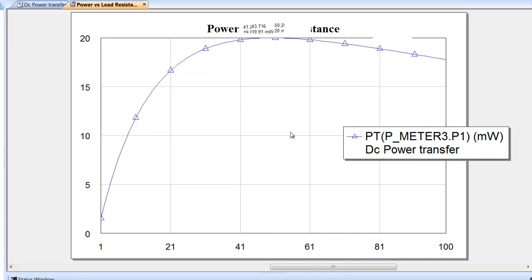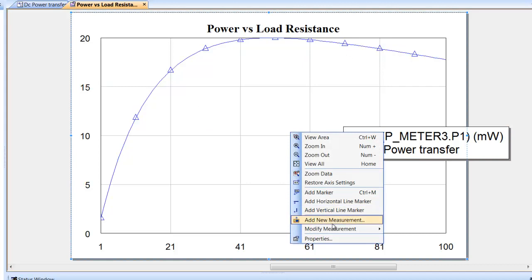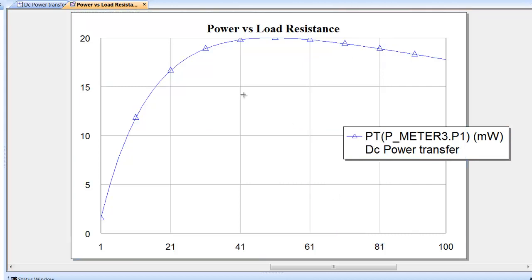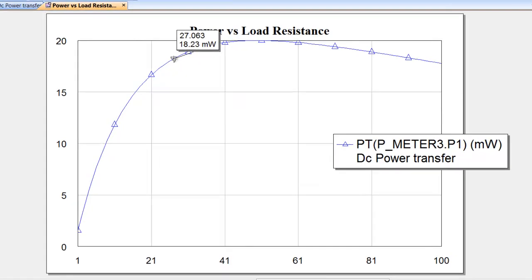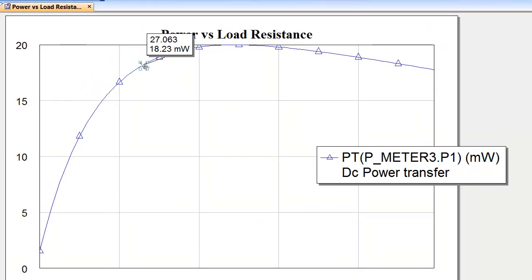Of course, you can also, as we've done before, insert a marker by just going to add marker. And then clicking on the curve. And then you can just move the marker to whichever point you like. As you can see, for instance here, about 50 ohms, you get 20 milliwatts, which is what we saw earlier.